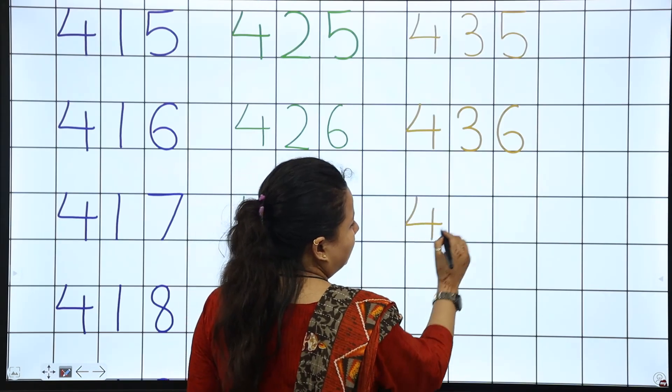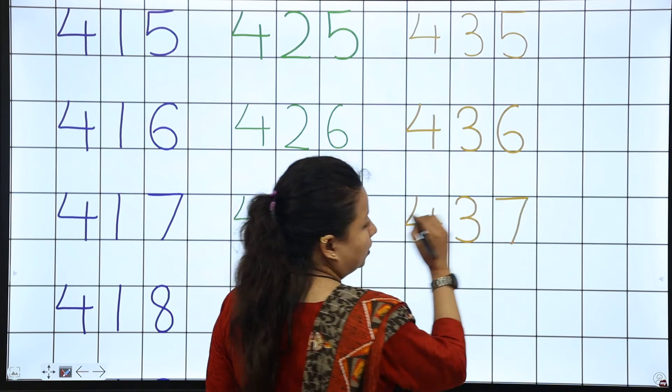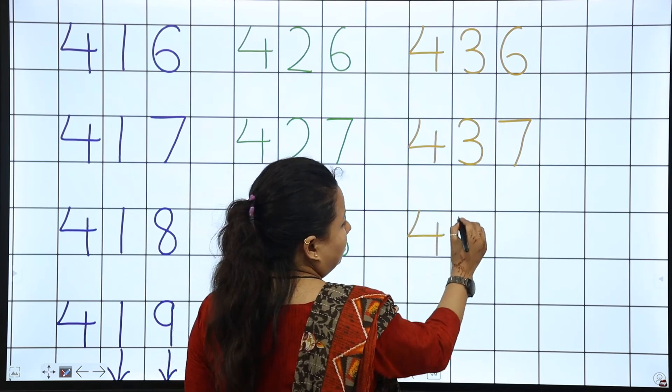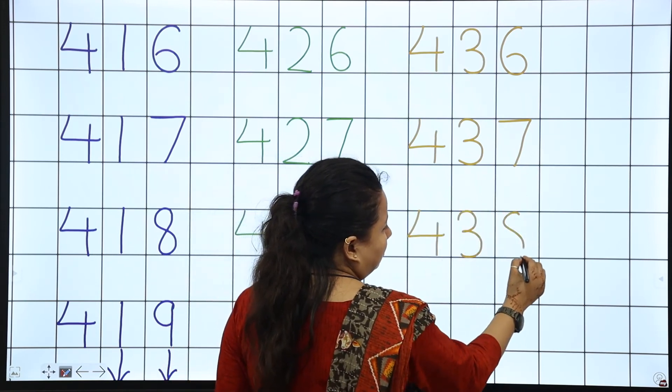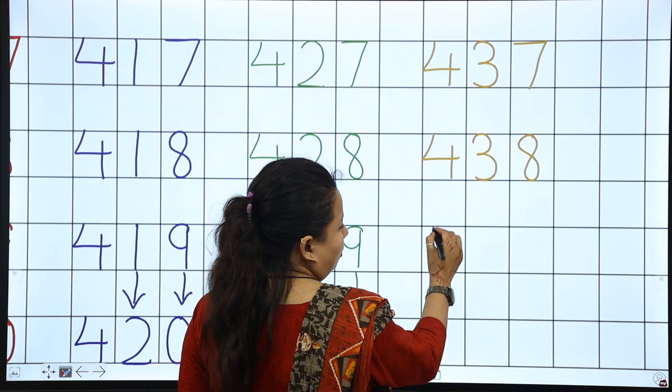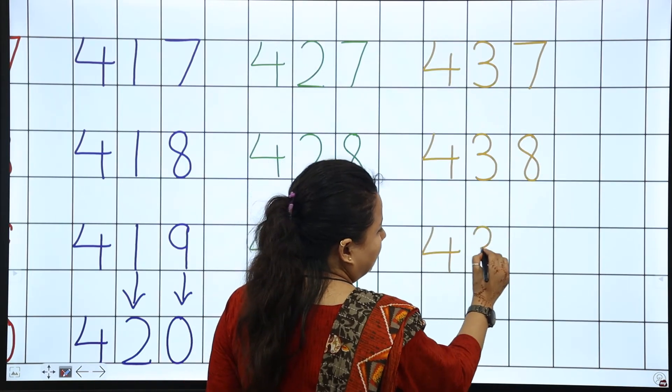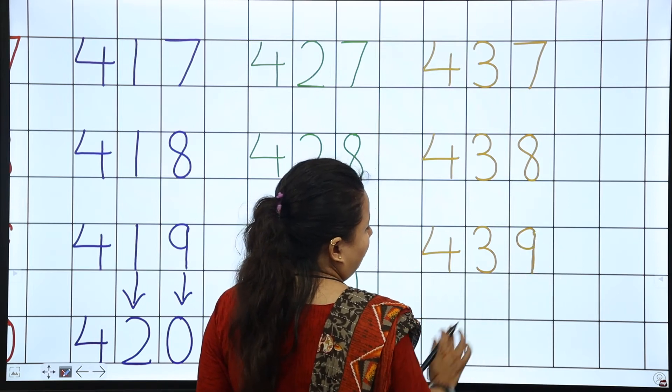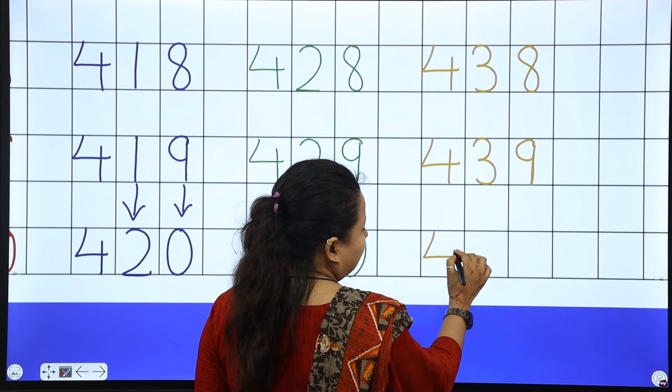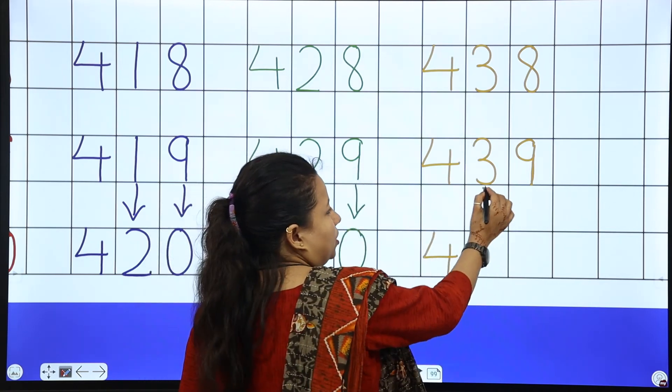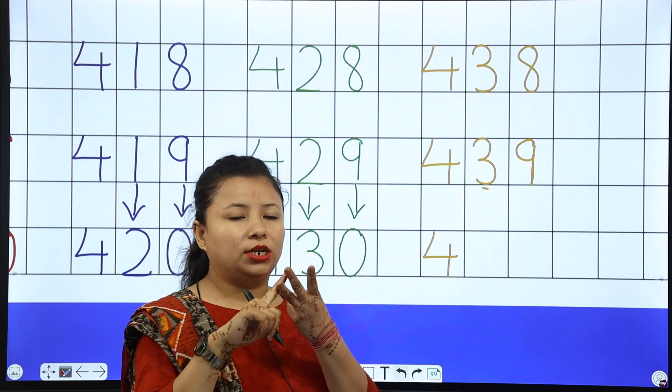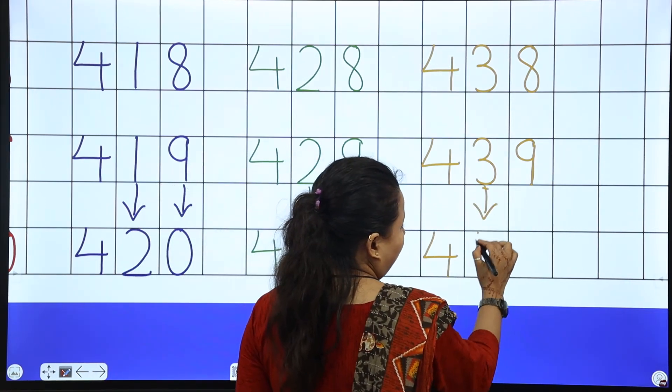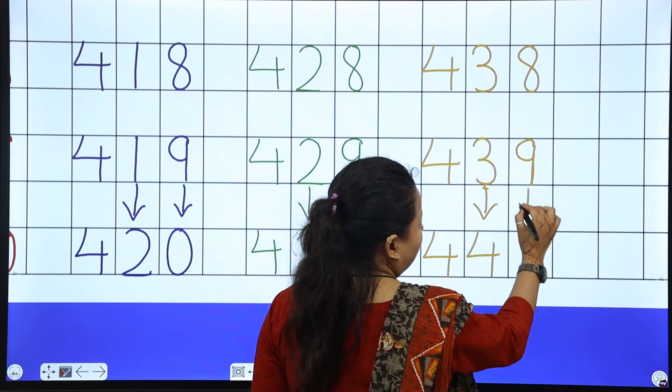436, 437. Now next is 438. And after 7, 8. 438, 439. Now next is 400. Now this is 3. So 1, 2, 3. And next number is 4. So after 3, 4. And after 9, 0.